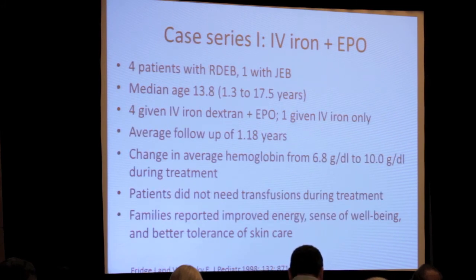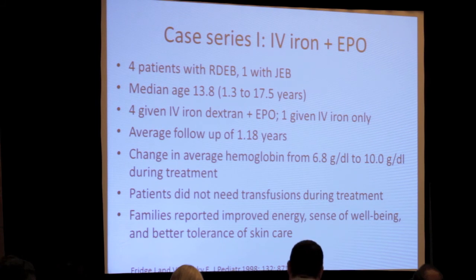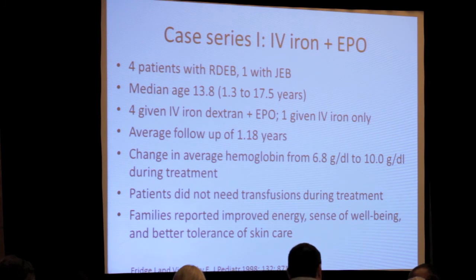A 1998 case series of five patients — four with ARDEV and one with JEB — were given IV iron, and four also received erythropoietin. These patients were followed for at least one year. Their average hemoglobin rose from typically around 7 to around 10 during treatment, and the patients did not need transfusions while receiving IV iron therapy. Patients subjectively reported feeling much more energetic and also felt that they tolerated their skin care better when being treated for their anemia.